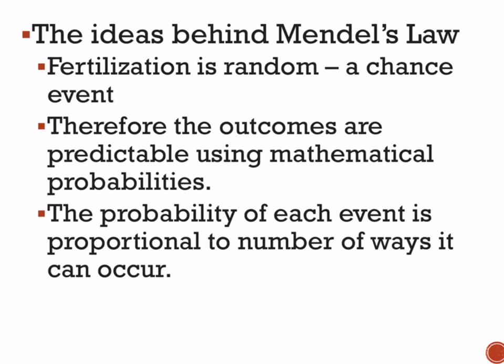Here's the idea behind Mendel's law of segregation: fertilization is random — it's a chance event, so which egg and which sperm come together is chance. Therefore the outcomes are predictable using math, which is what we just did. The probability of each event is proportional to the number of ways it can occur. It's just mathematical probability, and that's what explains how traits are inherited.